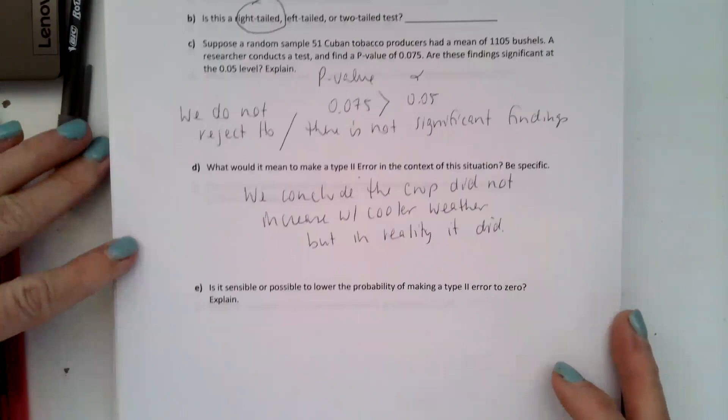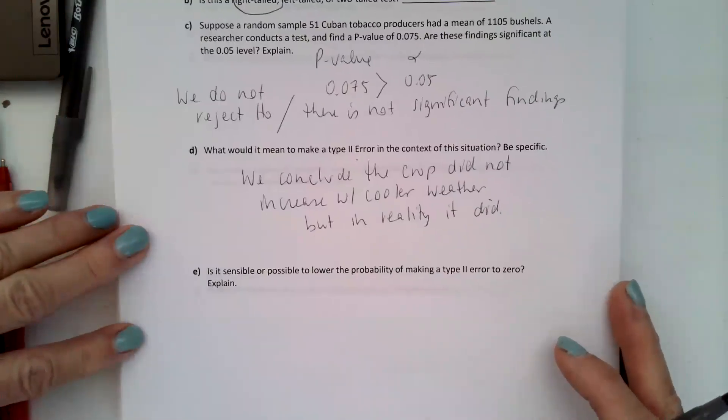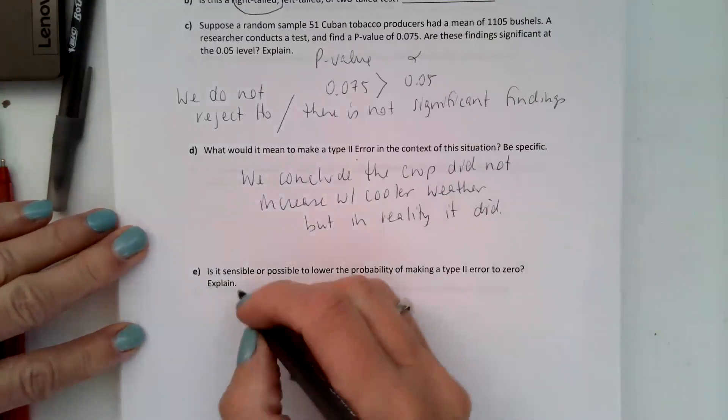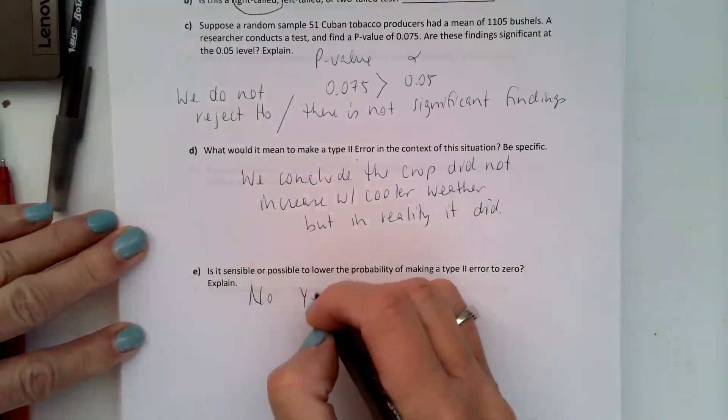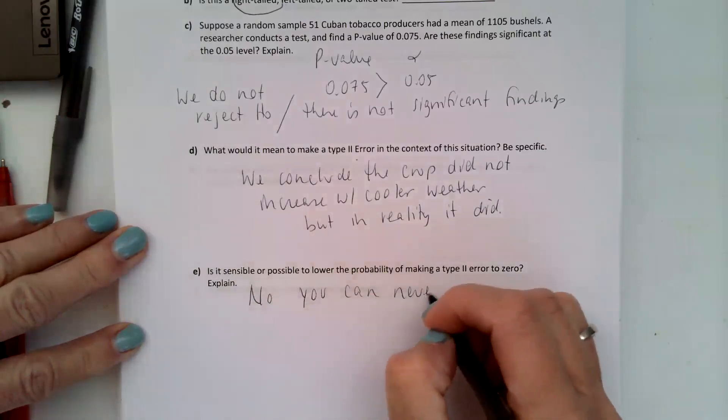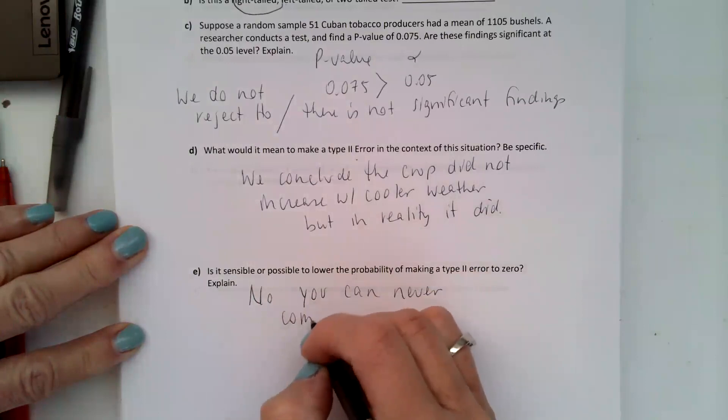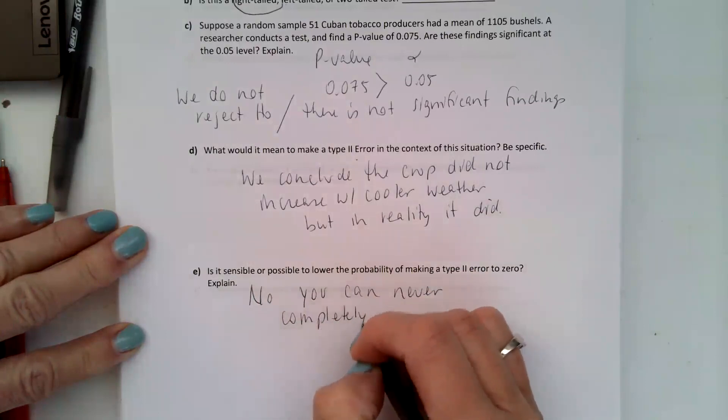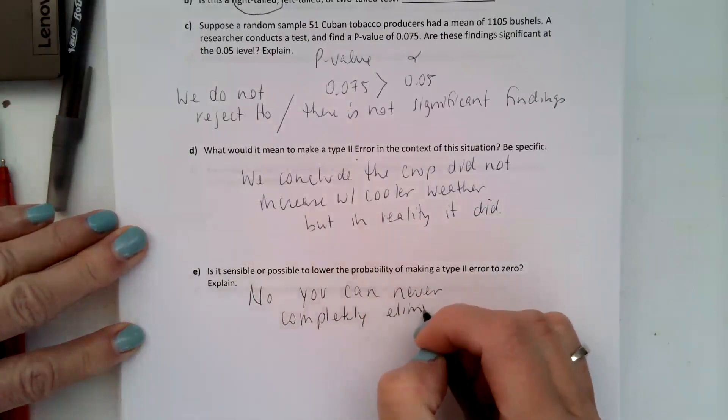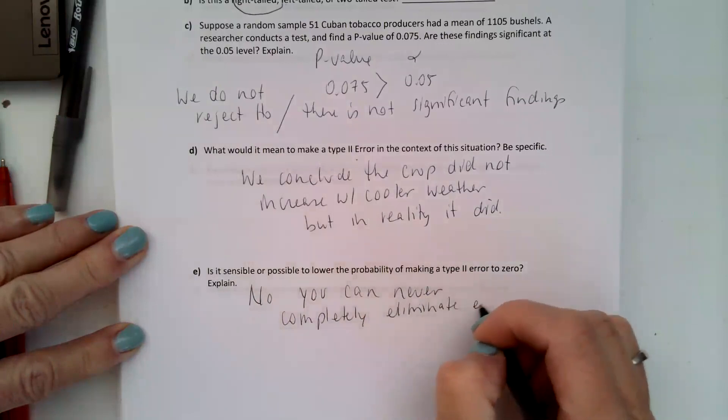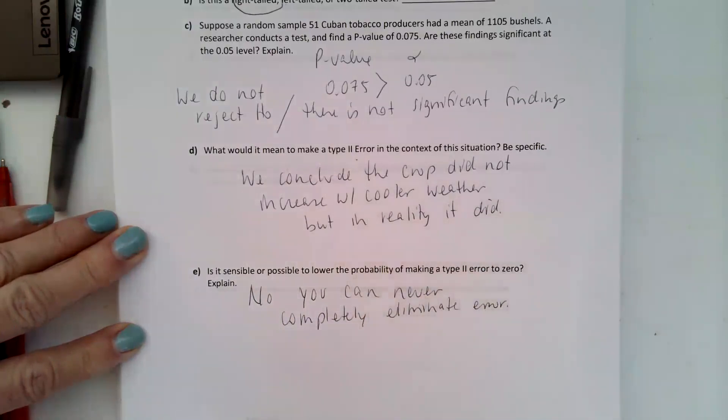Is it sensible or possible to lower the probability of making a type 2 error to zero? No, you can never completely eliminate error. It's not possible.